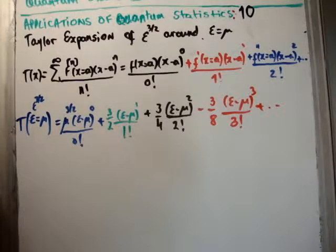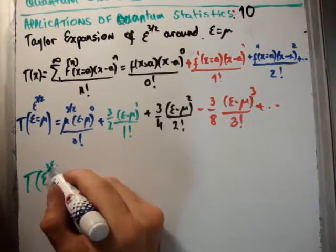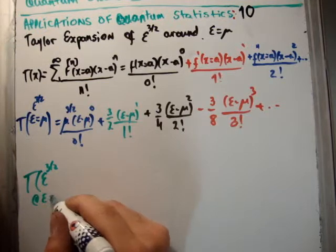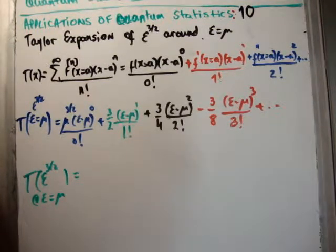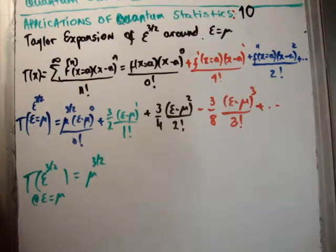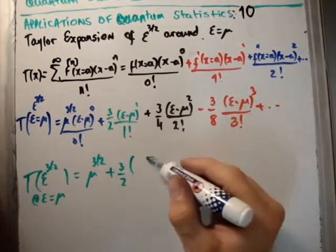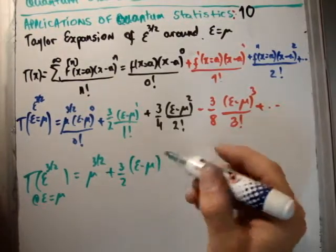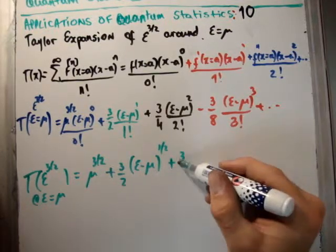We can rearrange this if we like. The way I'm going to leave it is that T(ε^(3/2)) at ε equal to μ can be rearranged as μ^(3/2) plus 3/2 (ε - μ)^(1/2) plus 3/8.